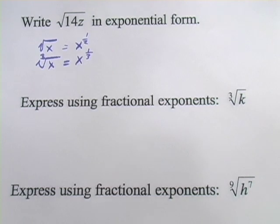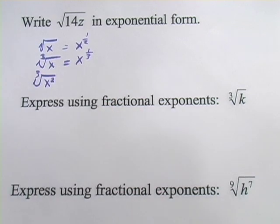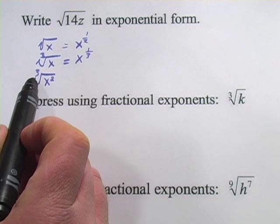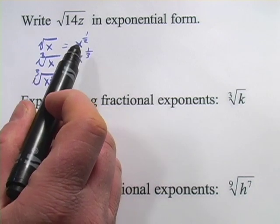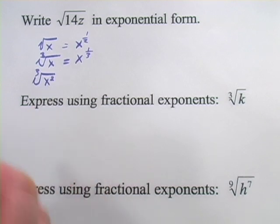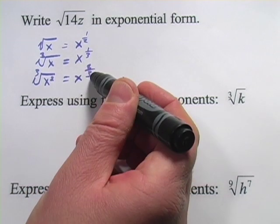And if you had the cube root of x squared, what happens here is that the root becomes the denominator of your fraction, just like it did up here, and the exponent becomes the numerator. So this would actually be x to the 2 thirds, exponent root.